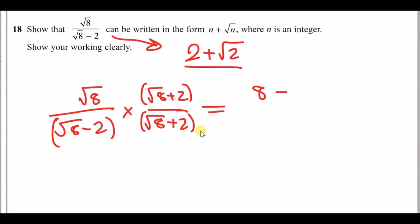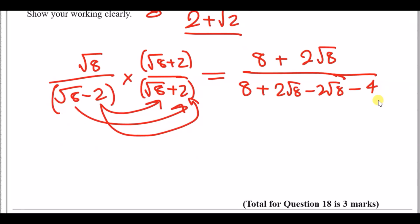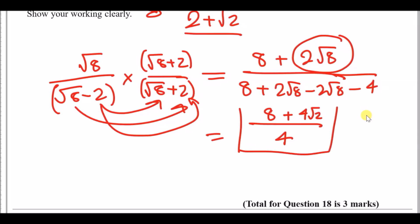Multiplying the numerator: √8 × √8 = 8, and √8 × 2 = 2√8. For the denominator, treat it like a double bracket: √8 × √8 = 8, √8 × 2 = 2√8, -2 × √8 = -2√8, and -2 × 2 = -4. The middle terms cancel, leaving 8 - 4 = 4 on the bottom. On the top, simplify 2√8 to 4√2, leaving (8 + 4√2) / 4. This simplifies to 2 + √2, confirming the result.